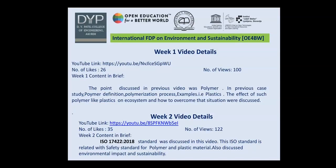In the previous video we discussed the definition of polymer, the polymerization process, different examples of polymers — one of which is plastic — and the effect of such polymers like plastic on the ecosystem, and how to overcome that situation. In the second week we discussed the ISO 17422:2018 standard, which is related to safety standards for polymer and plastic material, and also discussed environmental impact and sustainability.